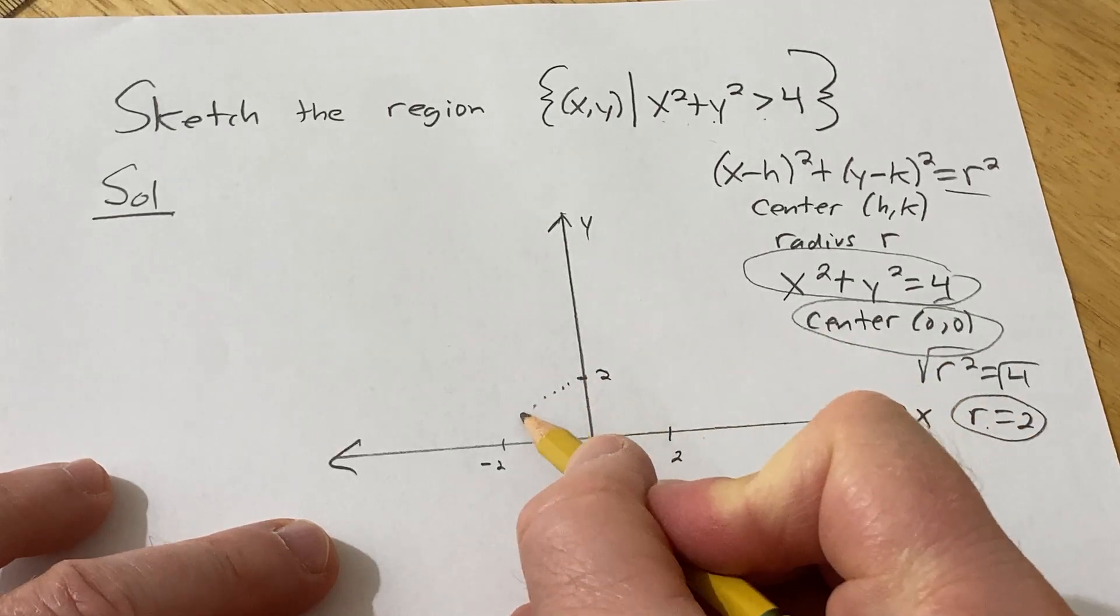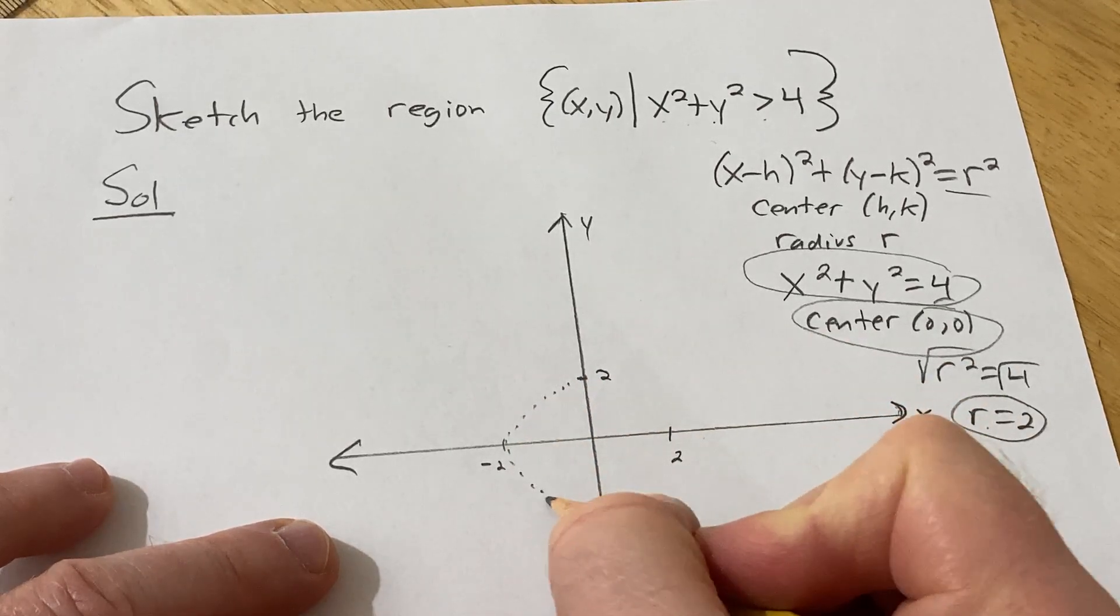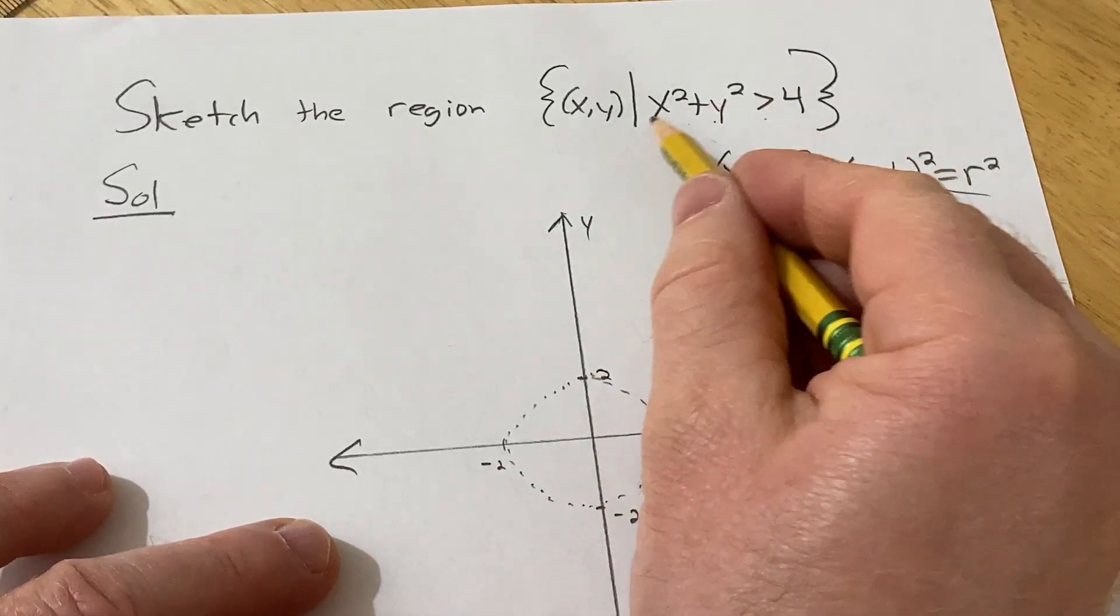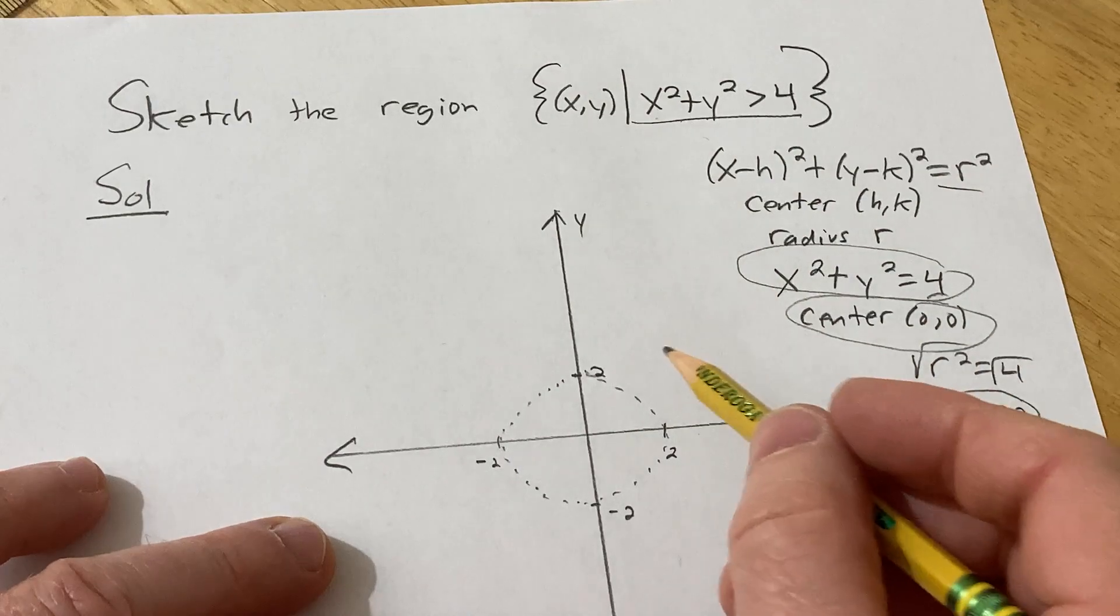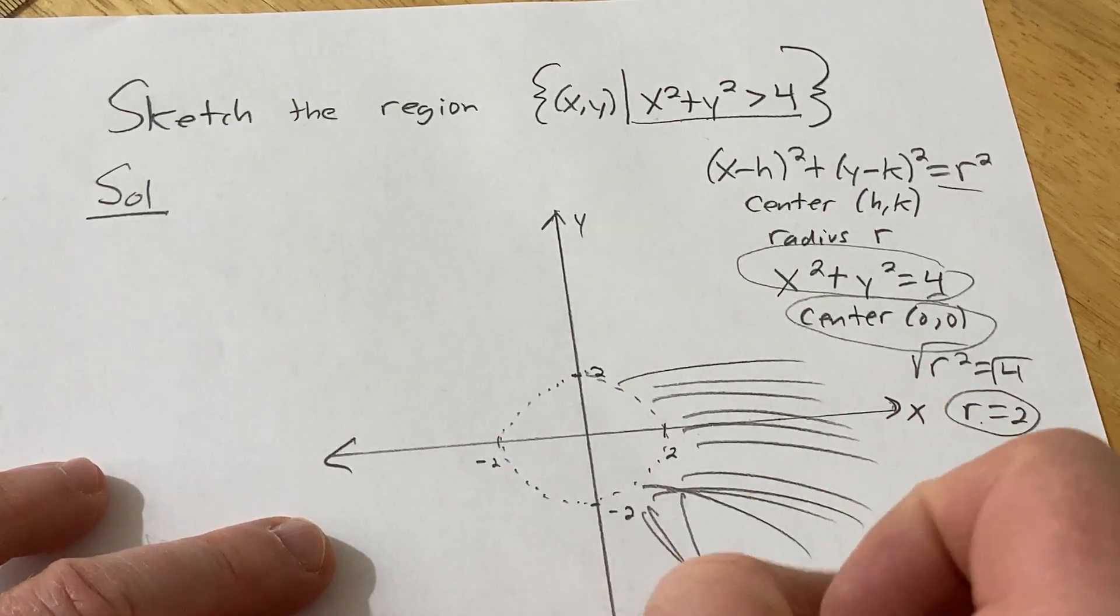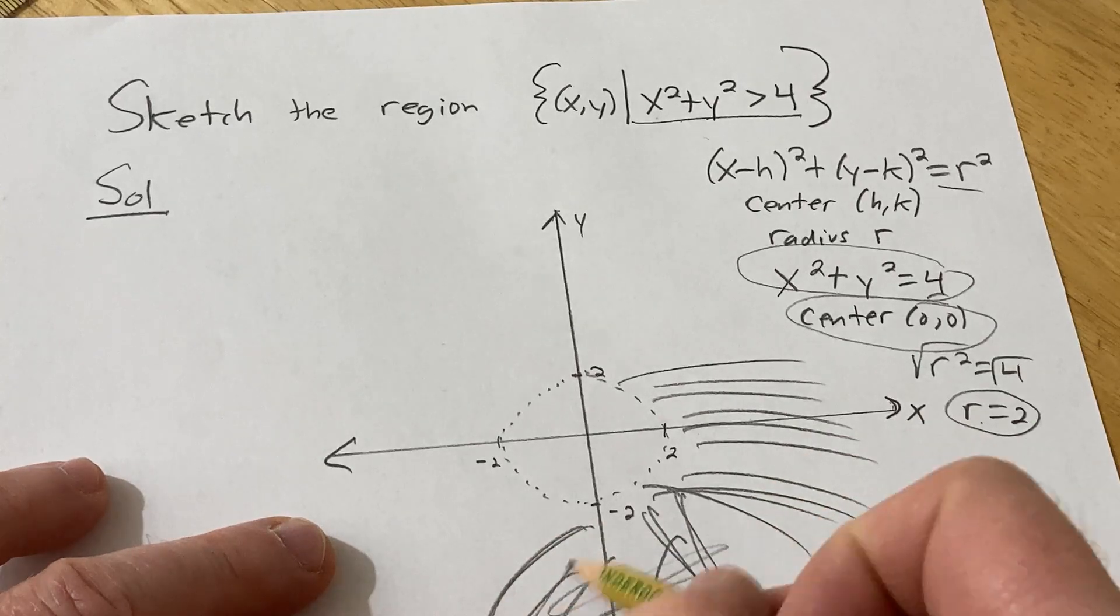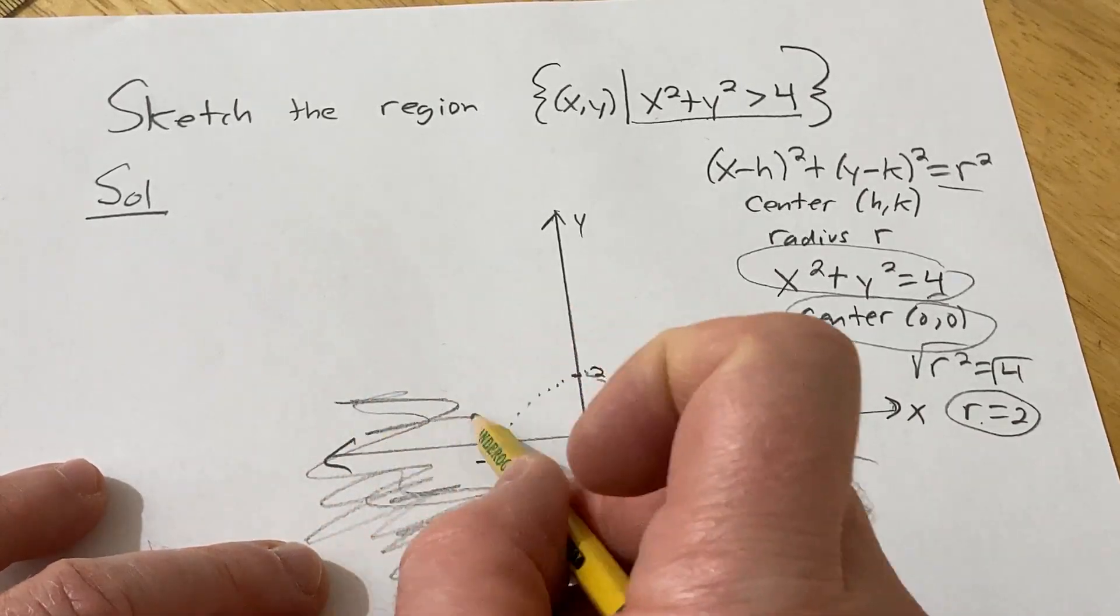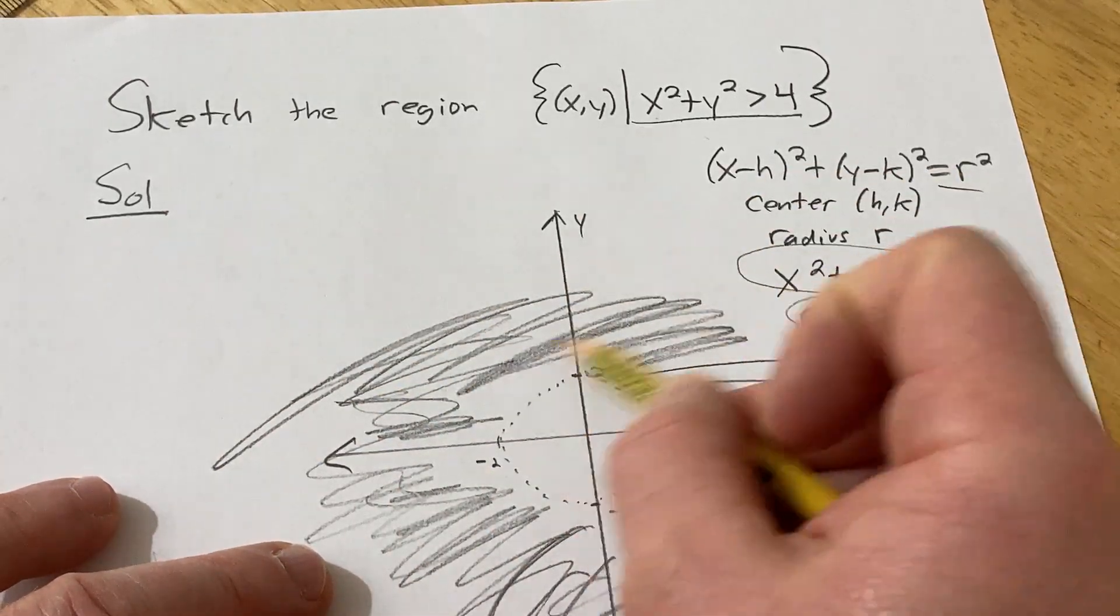And so basically, we're not including the circle because we have a greater than symbol. So it's everything outside the circle that we want. So it's basically all of this stuff here. That's going to be the answer. Everything outside the circle of radius 2 centered at the origin.